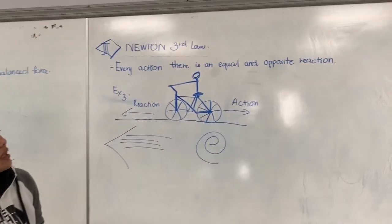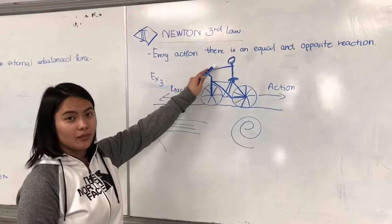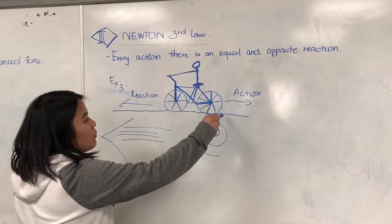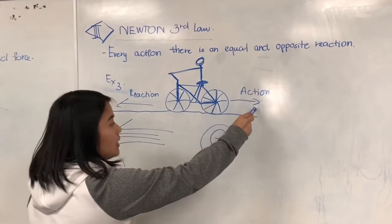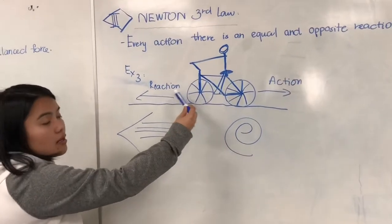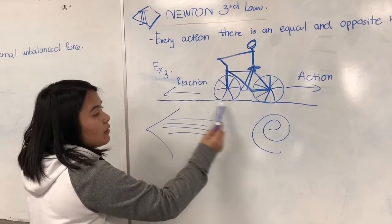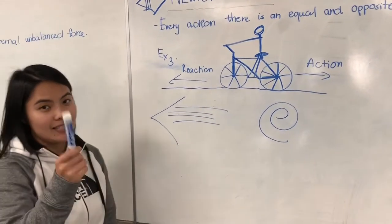In this example, I have Coach Kayla riding her bicycle. You can see her tire, when she goes forward, her tire will go backward, which means action. And because she pushes into the forward direction against the track, there will be a reaction.